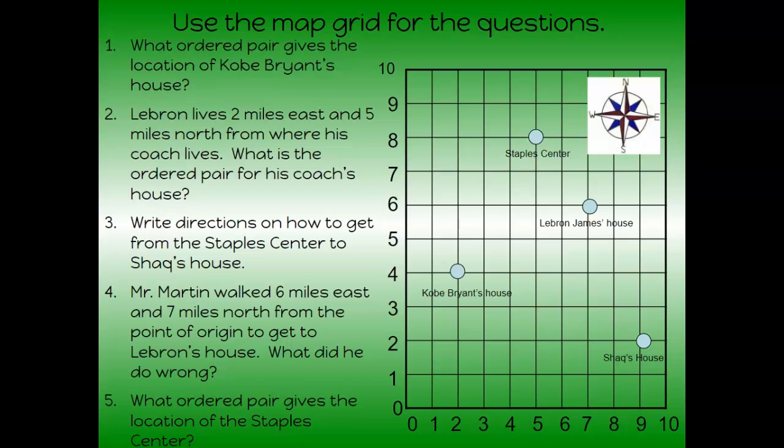All right, now let's do some real-world questions here. Using a coordinate plane that we have, it has some ordered pair, it's kind of like a map. It even has a compass rose for us. So let's look and see if we can answer these questions. So it says, what ordered pair gives the location of Kobe Bryant's house?